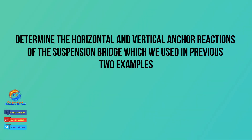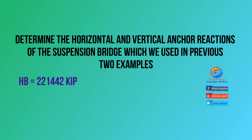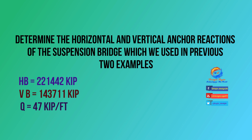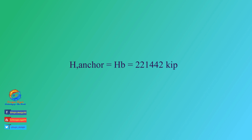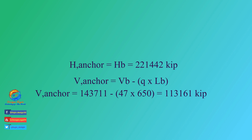Let's calculate the anchor reactions for the suspension bridge used in the previous example. From the previous example: Hb = 221,442 kip; Vb = 143,711 kip; q = 47 kip per foot; back span length Lb = 650 feet. Horizontal reaction at anchor: H_anchor = Hb = 221,442 kip. Vertical reaction at anchor: V_anchor = Vb − q·Lb = 143,711 − (47 × 650) = 143,711 − 30,550 = 113,161 kip.